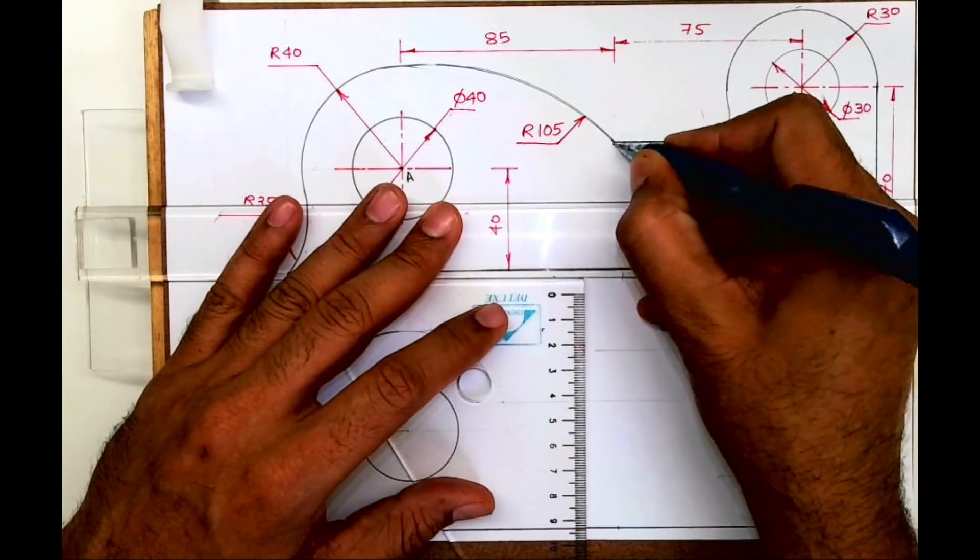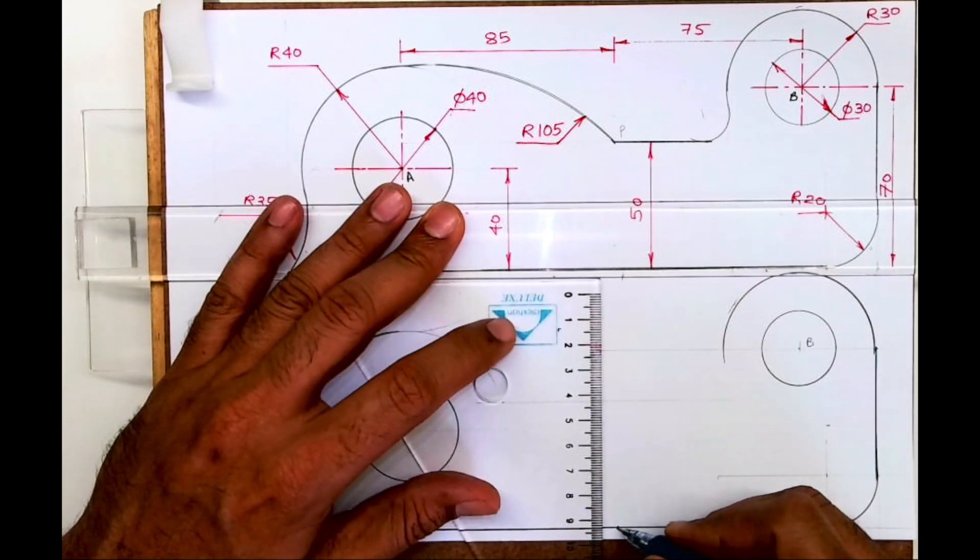Same way, if I want to draw radius 105, it's touching this point as well as radius 40 which is internal. First I will mark that point which is at height 50. Draw 50 parallel line. This is 85 given, so this is point P.